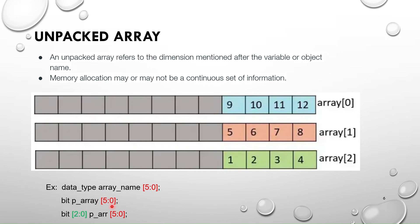When talking about packed or unpacked arrays, how you mention the dimension is what matters: dimension before the variable name means packed; dimension after the variable name means unpacked. A helpful memory trick: 'after' and 'unpacked' both start with a vowel sound. If you remember 'after = unpacked,' then packed is the opposite — before the variable name.